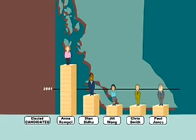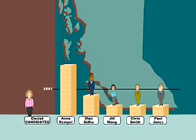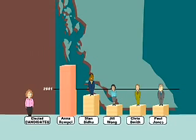After counting the first preferences marked on the ballots, Anna Rempel has enough votes to be elected. But she has more votes than she needs — she has a surplus.